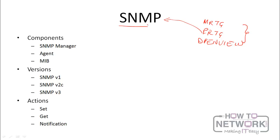There are three components in SNMP. The first is called the SNMP manager, and the SNMP manager is on a server. All it does is communicate with the SNMP agent, and the agent is what's installed on devices. Every Cisco IOS router and switch actually has SNMP agents on them, and these SNMP agents communicate with the SNMP manager, feeding it information about the network. All this information is stored in a database called the Management Information Base.